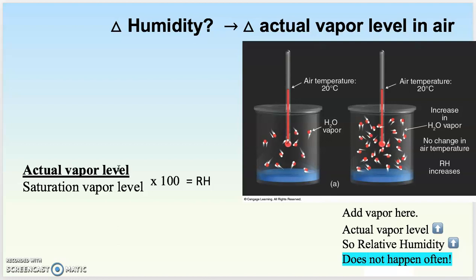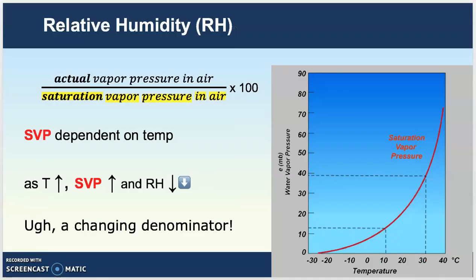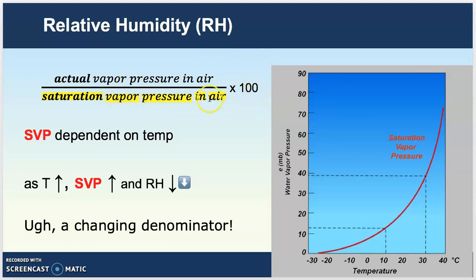What is impacting the humidity level is the denominator — the saturation vapor level. If we look at saturation vapor pressure in the denominator using the temperature graph, as temperature goes up, saturation vapor pressure goes up. That means a bigger number in the denominator, which means the overall quotient — relative humidity — goes lower. So as temperature rises, relative humidity goes down.